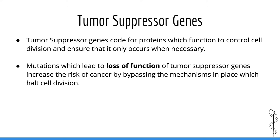Let's start with tumor suppressor genes. Tumor suppressor genes code for proteins which function to control cell division. In other words, they tend to make proteins which stop cell division and only allow it to occur when needed. Mutations which lead to loss of function of tumor suppressor genes increase the risk of cancer by allowing cells to bypass the mechanisms which normally control cell division. In a nutshell, tumor suppressor genes make sure cells only undergo cell division when they are ready.